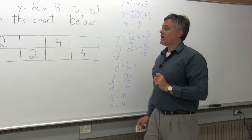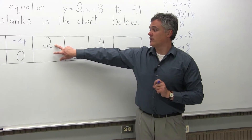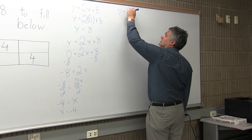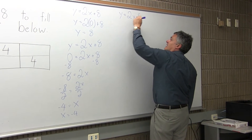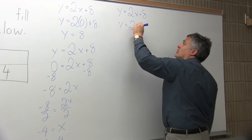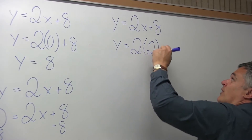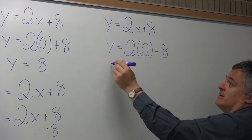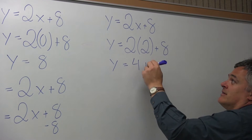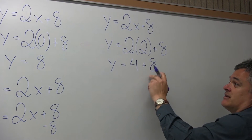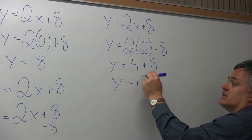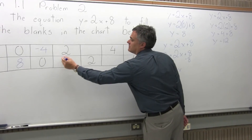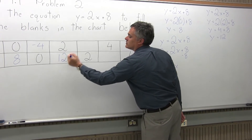The next blank in the chart gives us a value of 2 for x and a blank for y. Starting again with y equals 2x plus 8, the chart says use a value of 2 for x. So the equation becomes y equals 2 times 2 plus 8. 2 times 2 is 4, plus 8 at the end — 4 plus 8 is 12. So y equals 12. When x is 2, y is positive 12.